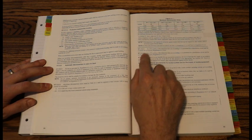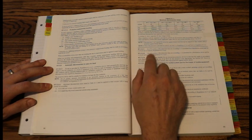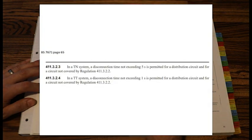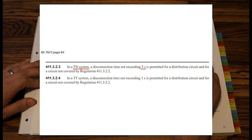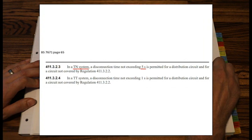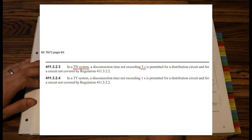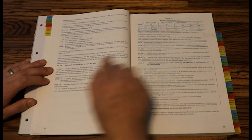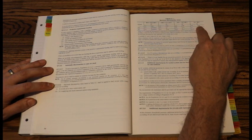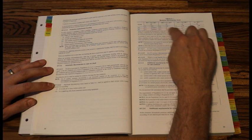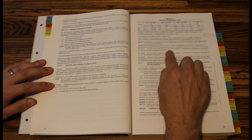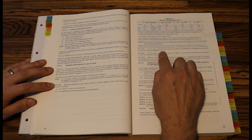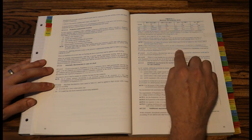Below it, we have 411.3.2.3 and .4. It says in a TN system and in a TT system. Our question is a TN system, so we're here. In a TN system, a disconnection time not exceeding 5 seconds is permitted for a distribution circuit or for a circuit not covered by regulation 41. So if my circuit is not covered by this table, I have this regulation. So my maximum disconnection time is 5 seconds.